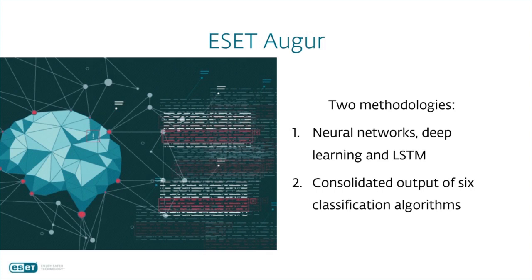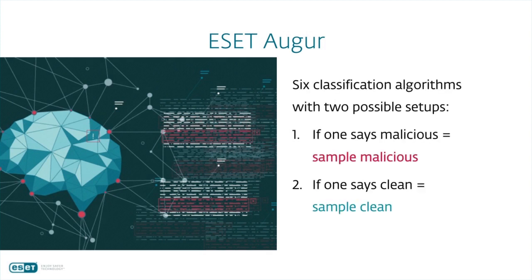These six algorithms could be set up in two different ways. The first, more aggressive setup means that if one of the algorithms says the sample is malicious, then we declare the whole thing malicious. This is better for enterprises and big businesses, as their admins are mostly working with flagged samples and will look at them more closely. The second, more conservative setup means that if one of the six algorithms says the sample is clean, then we declare it clean — that's better for regular users and smaller companies that don't have the human force to evaluate everything.